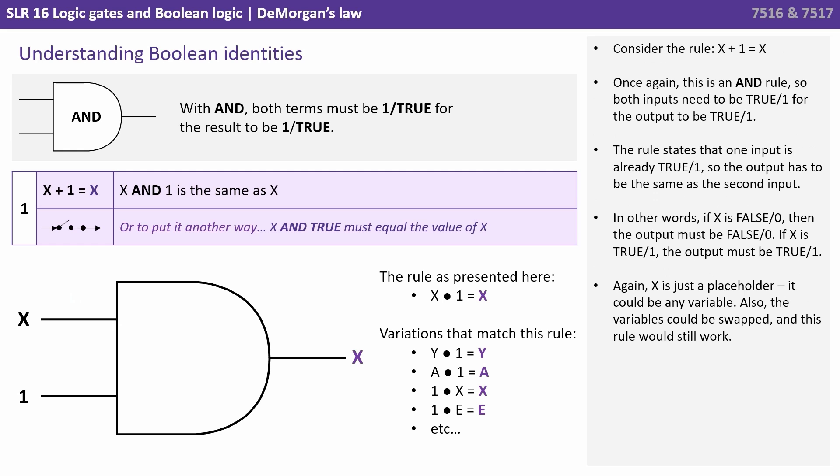Let's have a look at another one. Let's consider the rule X and one equals X. Once again, this is an AND rule. So both inputs have to be true for the output to be true. The rule states that one input is already true. So the output now has to match or be the same as the second input. In other words, if X is false, then the output will be false. If X is one, the output will be one. And again, X is just a placeholder. It could be any variable. And also the variables could be swapped and the rule would still work.